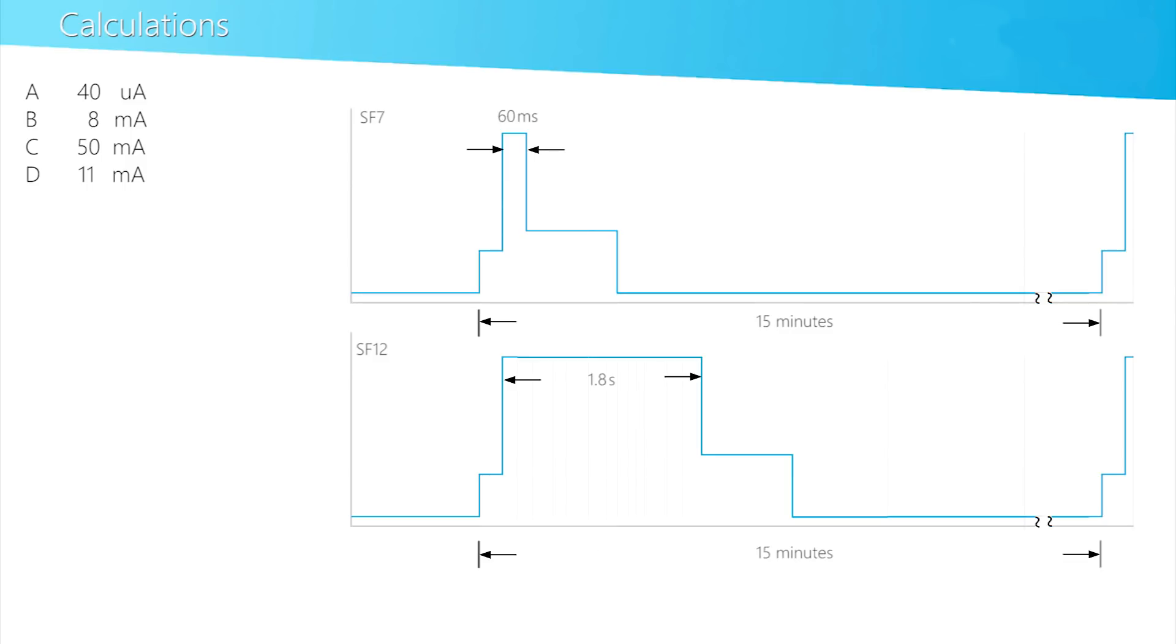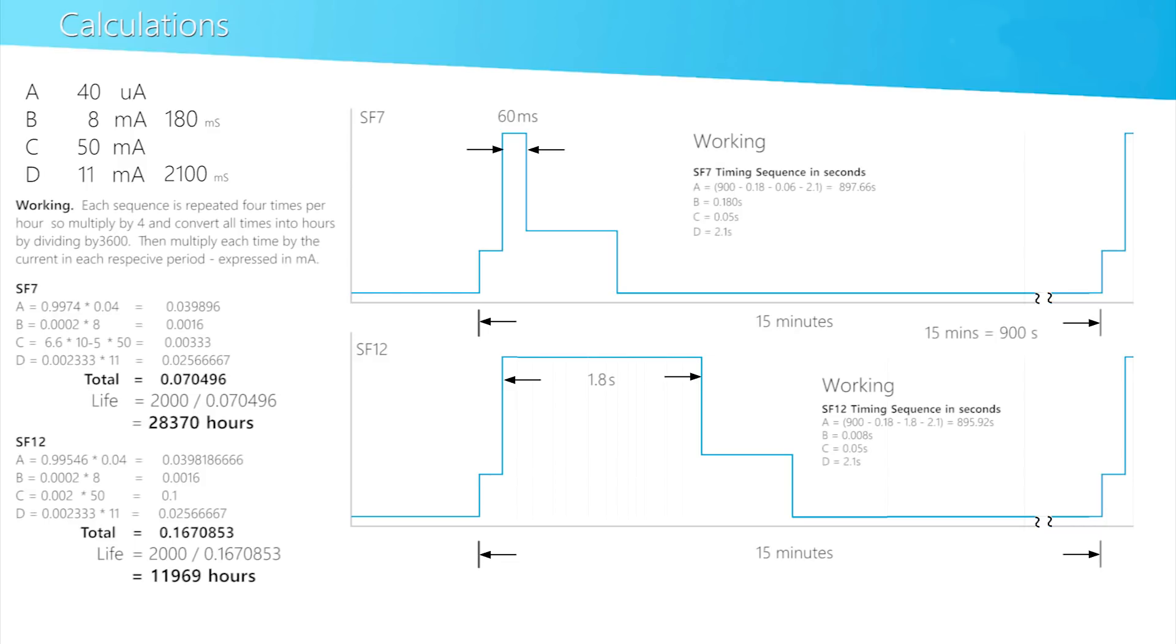Assume that the device wakes every 15 minutes. B is 180 milliseconds. The receive phase takes 2100 milliseconds. And again, by the magic of maths by crossfade, we end up with...